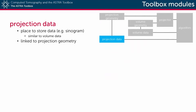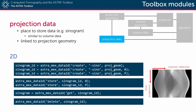Projection data is stored in the ASTRA Toolbox in exactly the same way as volume data. The second argument in the create function is now 'sino' to reflect that it is a sinogram or projection data, and the third argument is a projection geometry.